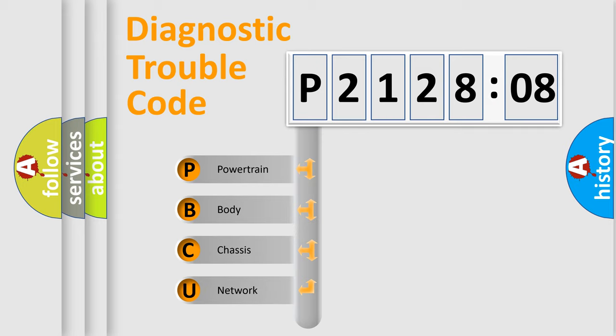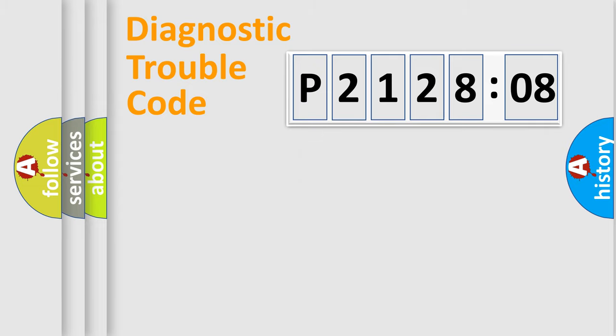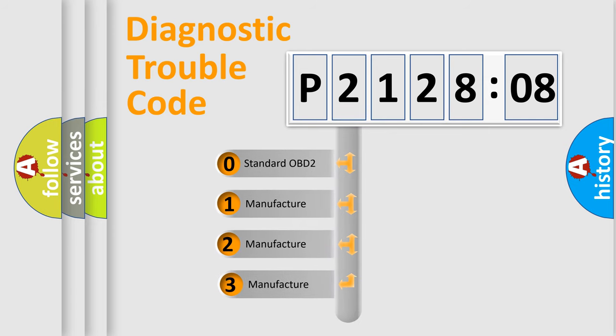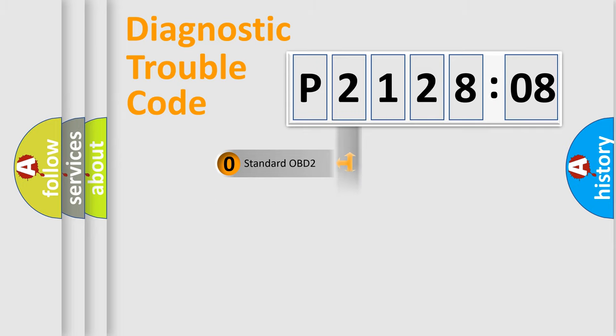If the second character is expressed as zero, it is a standardized error. In the case of numbers 1, 2, 3, it is a car-specific error. The third character specifies a subset of errors. The distribution shown is valid only for the standardized DTC code. Only the last two characters define the specific fault of the group.